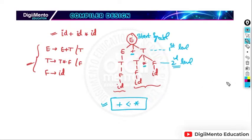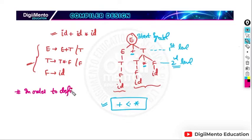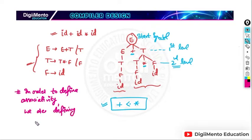Now note one important point: in order to define associativity, we define recursion. We can decide associativity by checking whether a production is left recursive or right recursive. If it is left recursive, the operator has left associativity; if it is right recursive, the operator has right associativity.